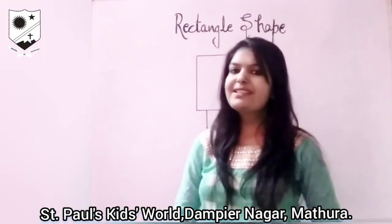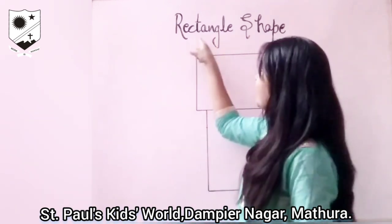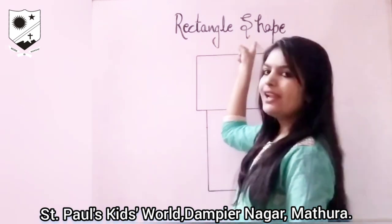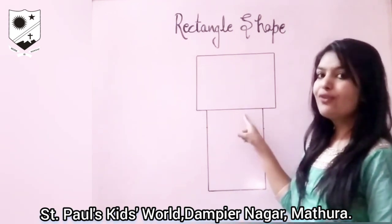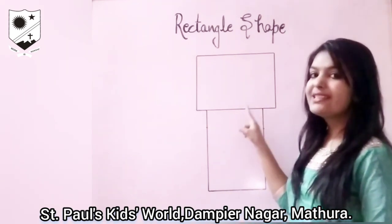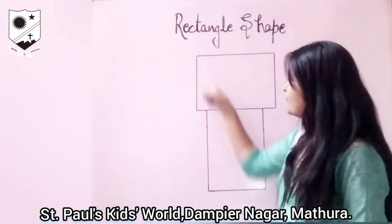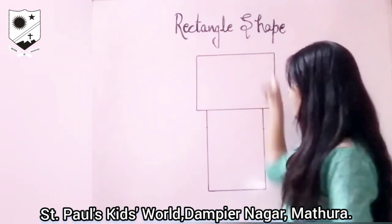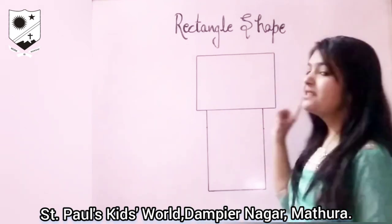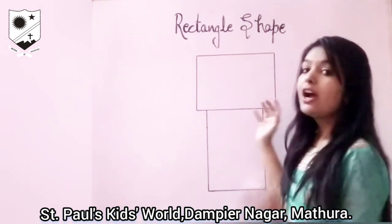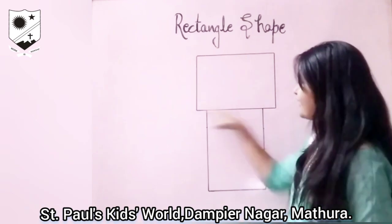Good morning students. In this video we will discuss about rectangle shapes. You can see I have drawn this rectangle shape for you. This is rectangle shape. Two standing lines of same length and two sleeping lines of same length are joined together — they make a rectangle shape.